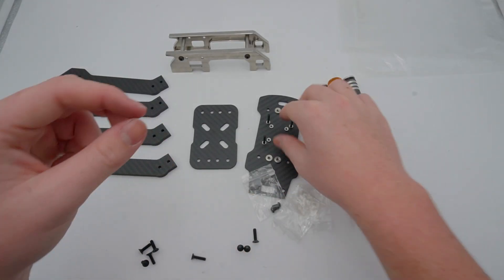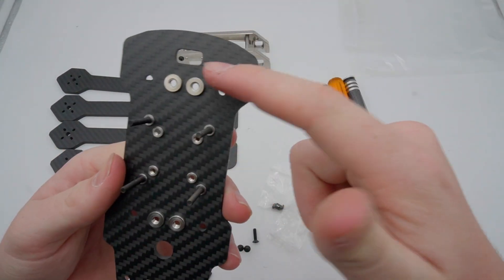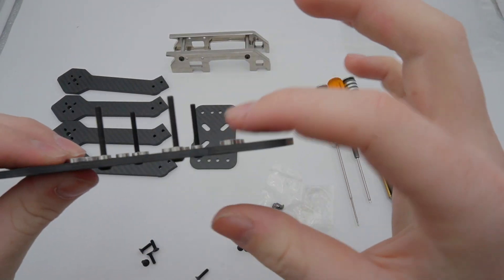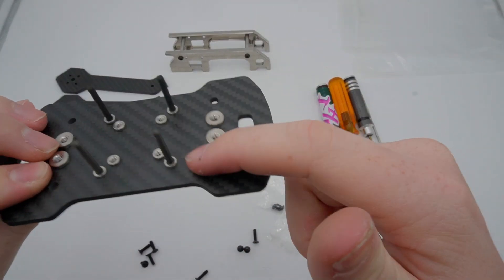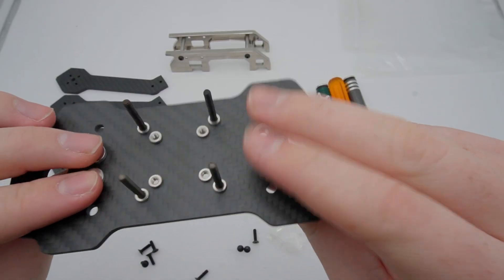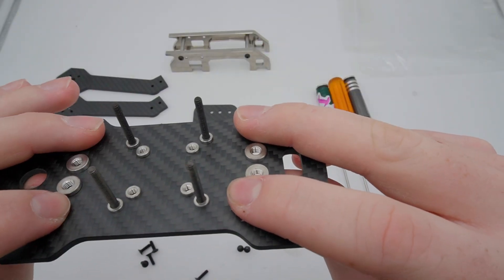So a good way to think about it is the short ones are not going to come above the plate. So your long ones are going to go on these outside holes right here. And your short ones are going to go in these two middle ones on both sides. And then your long ones are going to go on the outside holes.